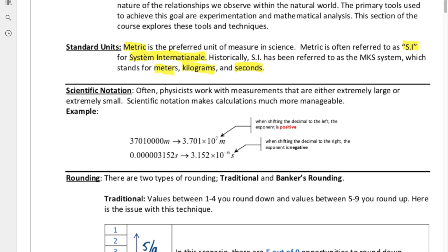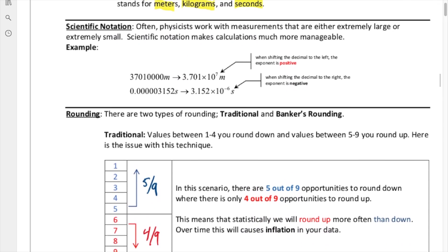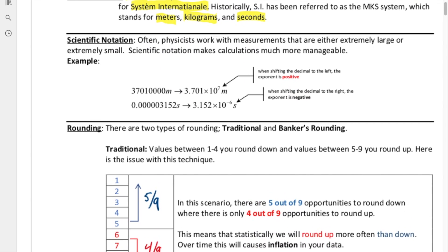Next thing we need to talk about is how we work with numbers in physics. Often physicists have to work with measurements that are extremely large or extremely small. Scientific notation makes calculations much, much more manageable. You may have seen scientific notation in earlier grades, but we're going to review that here specifically.